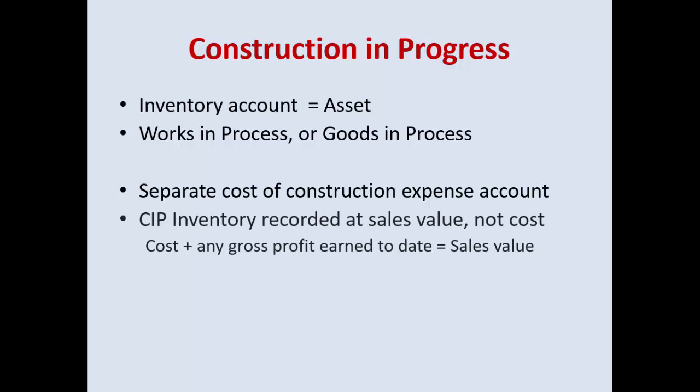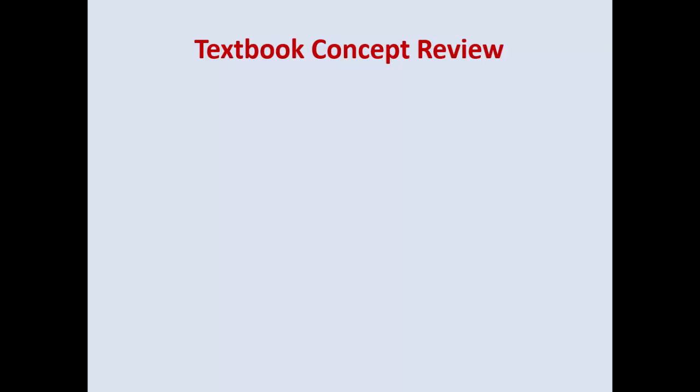Construction in progress (CIP) is an inventory account, very similar to work-in-process. There is also a separate cost of construction expense account. CIP inventory is recorded at sales value — this differs from work-in-process. Remember, merchandise inventory and finished goods are scored at cost and then sold at a profit, but CIP is valued at sales value, so not only do you record cost, you also capitalize any gross profit into it.